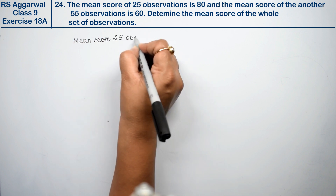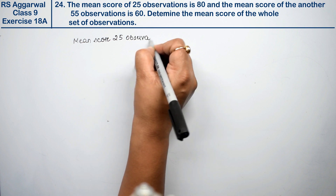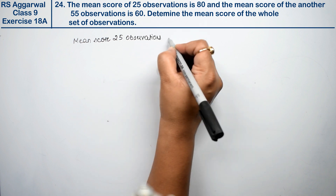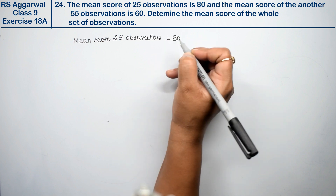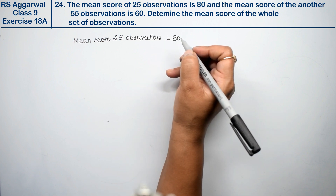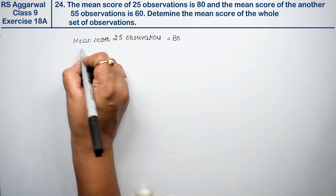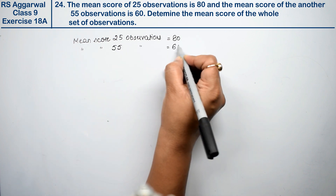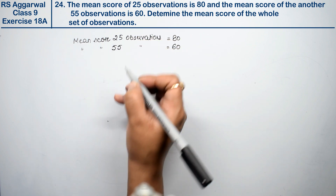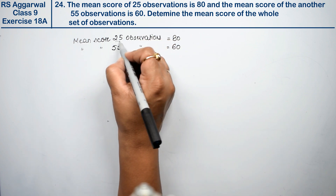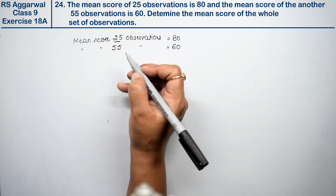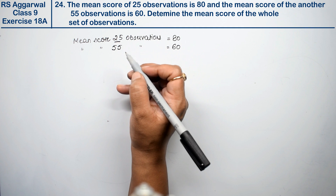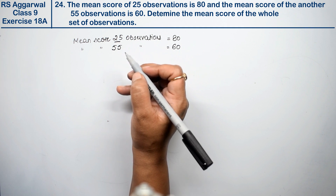25 observations have a mean score of 80, and 55 observations have a mean score of 60. We have a total of 25 plus 55 observations. First we get out the sum of all the observations, and after that we get out the total mean score.